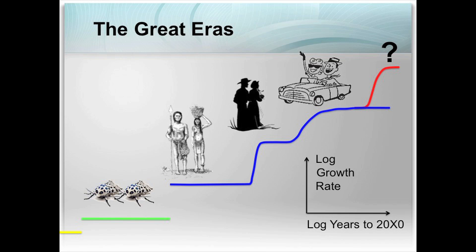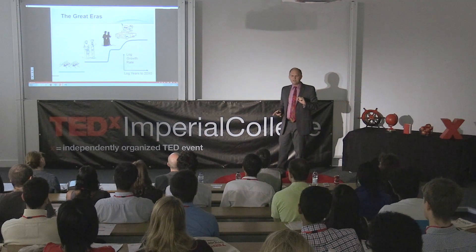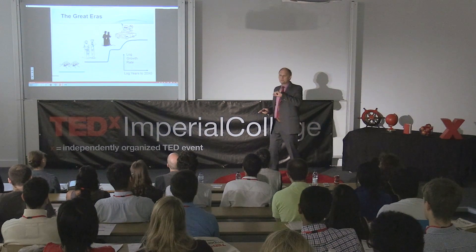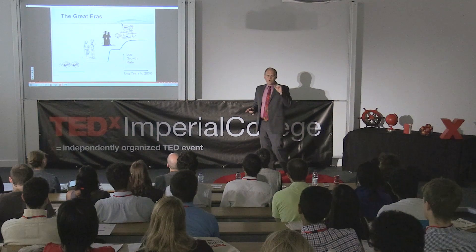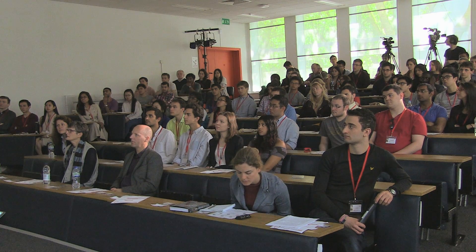Human foragers doubled roughly every quarter million years. Then around 10,000 years ago, farmers started doubling every thousand years. And then around two or three hundred years ago, industry started doubling every 15 years.